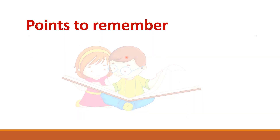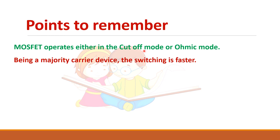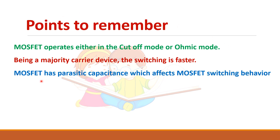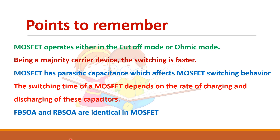Key points to remember: MOSFET operates in either cut-off mode or ohmic mode when used as a switch. Being a majority carrier device, switching is faster. MOSFET has parasitic capacitance which affects switching behavior, and the switching time depends on the rate of charging and discharging of this parasitic capacitance. The forward and reverse safe operating areas are identical in the case of MOSFET.